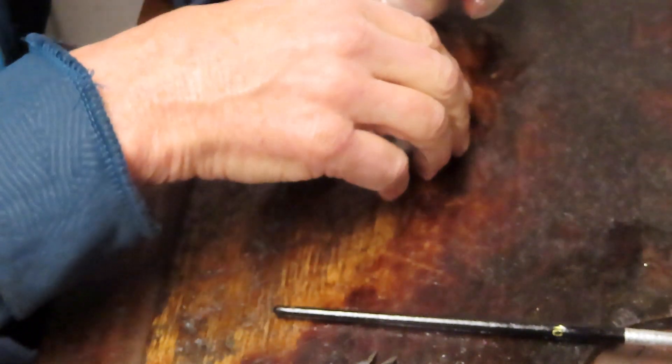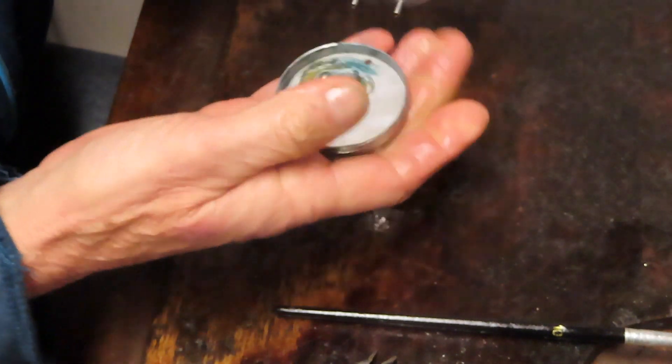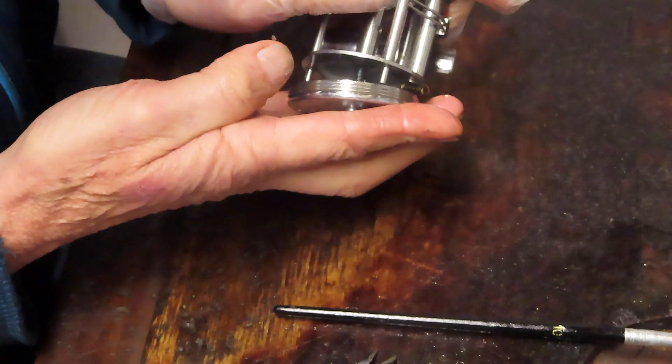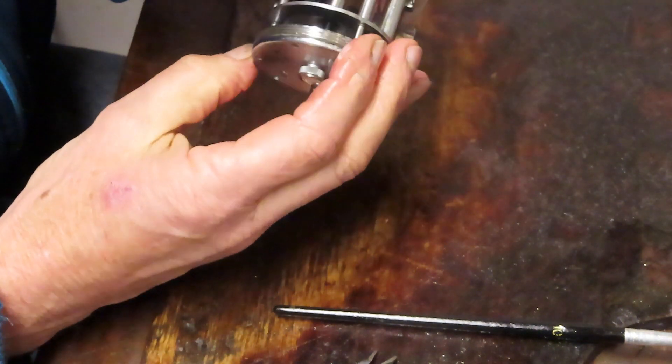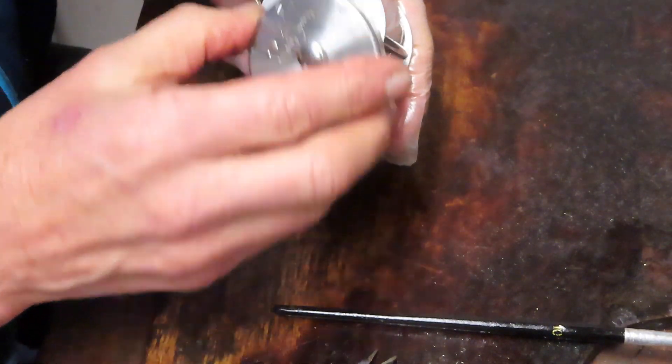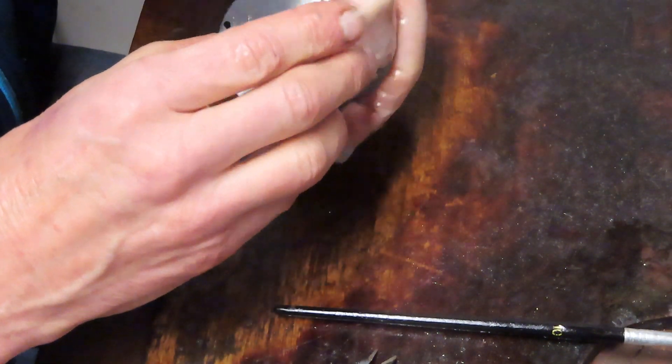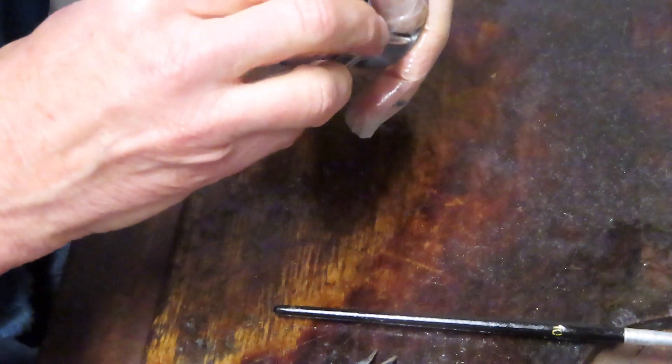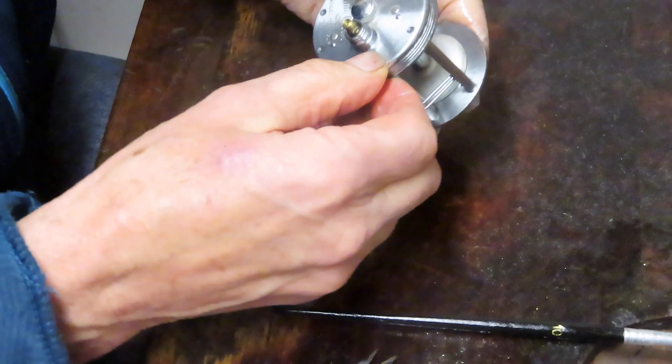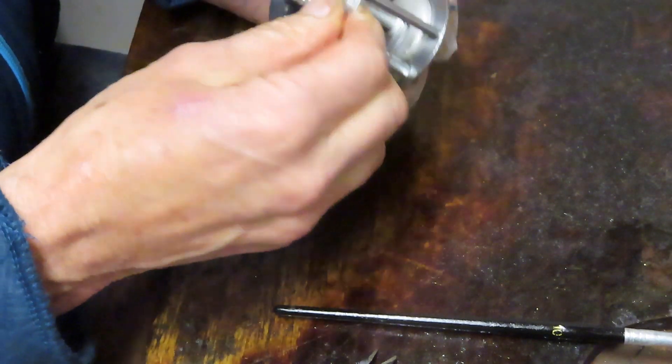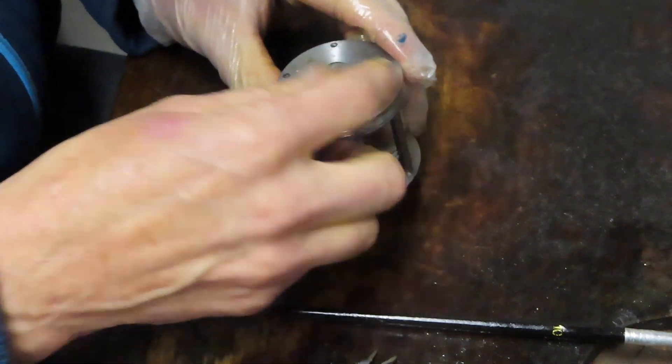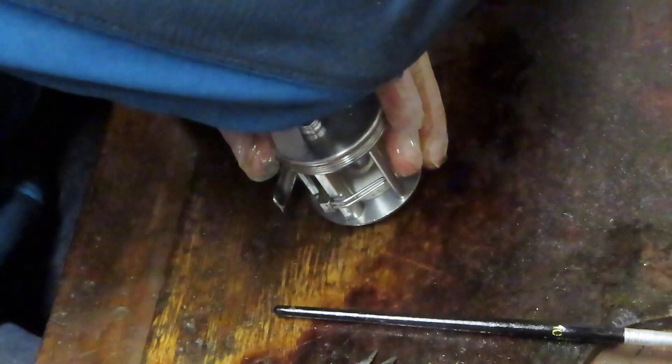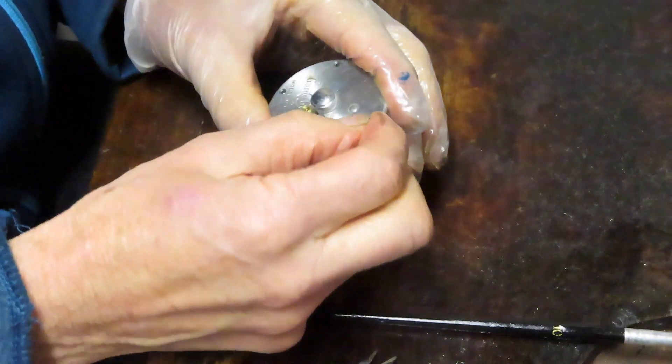Let's just go reinstall. It's kind of that simple. A reel that somebody may have given up on because it's tight all of a sudden gets that second chance. Just need to line up the holes properly, just like that. We'll put those four side plate screws back in.